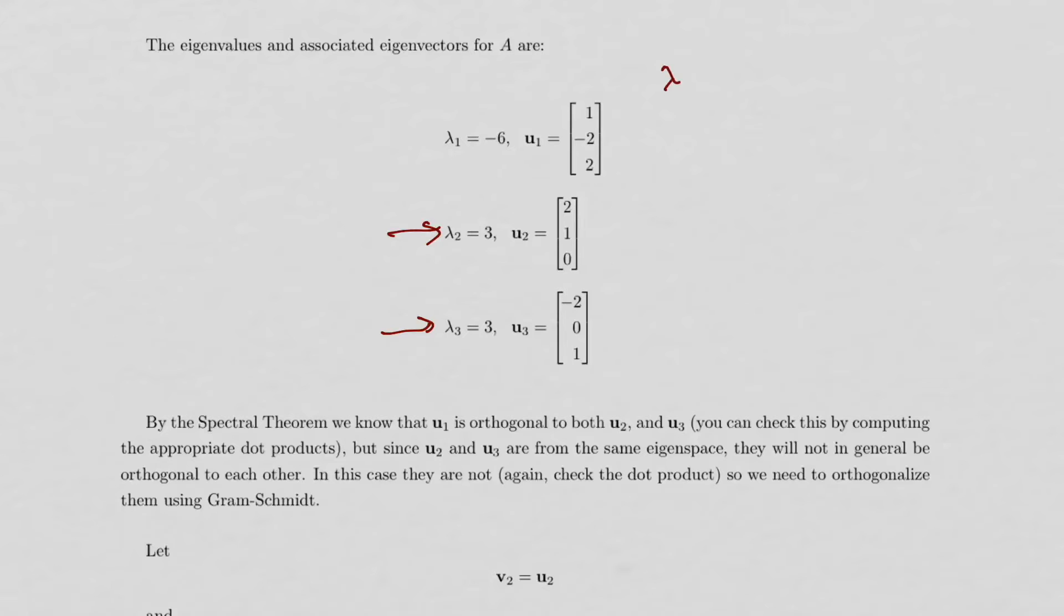So some people might just say lambda 1 is minus 6 and lambda 2 is 3 and that there are only two eigenvalues. Well, the spectral theorem says that we'll get n real eigenvalues.